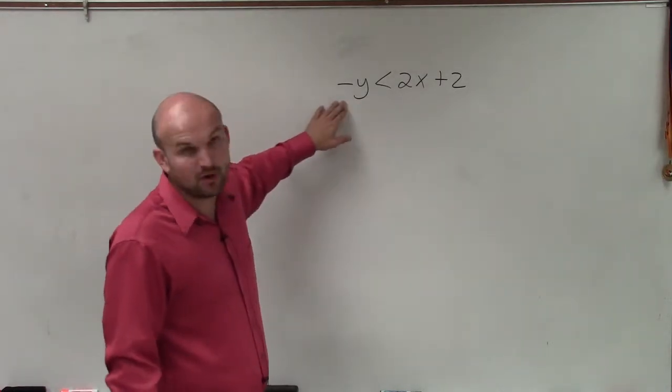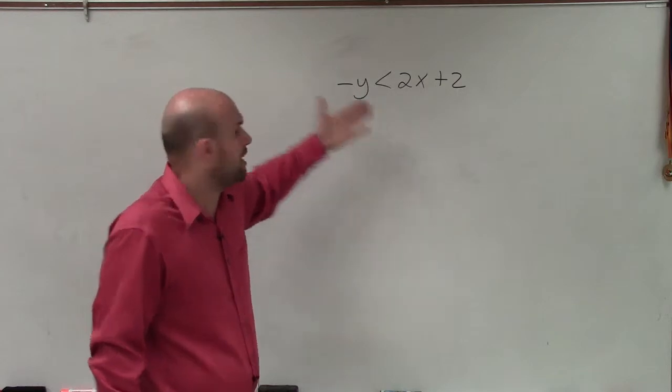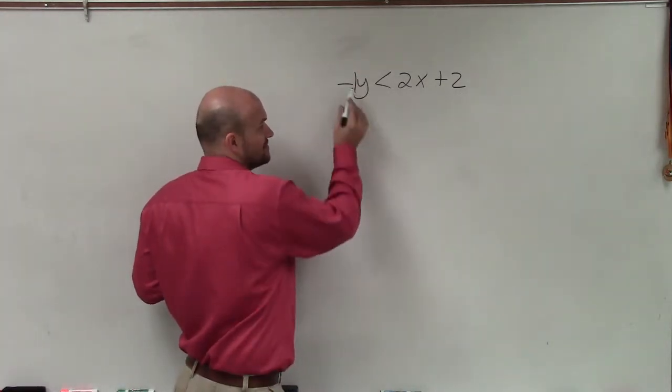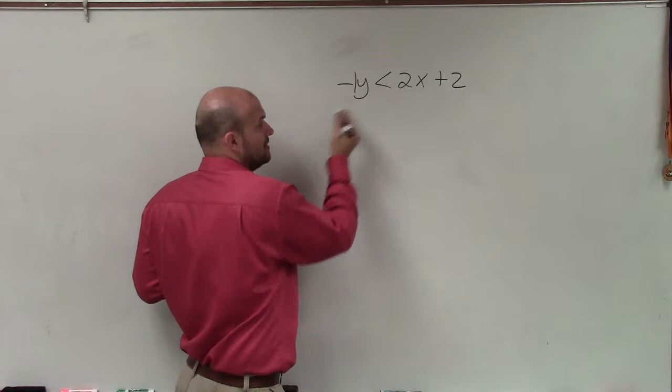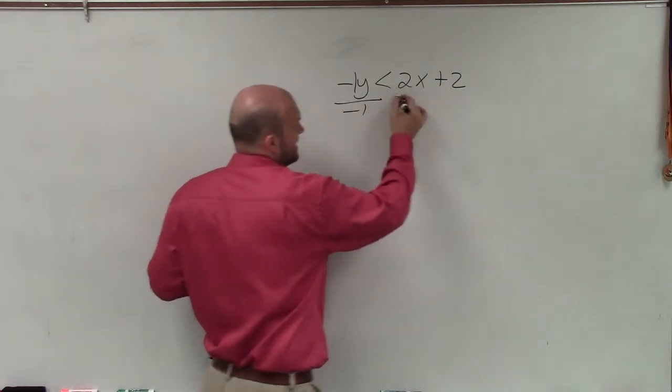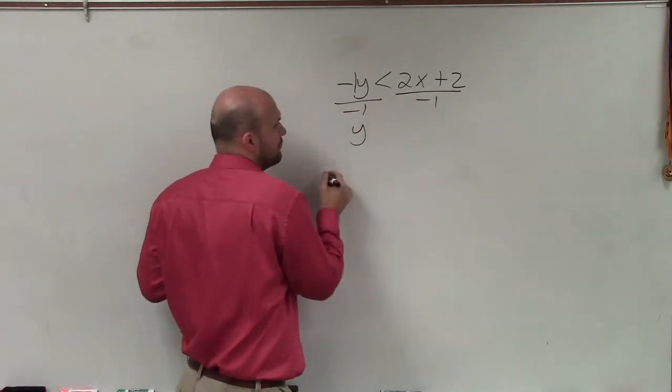Right now, we have y multiplied by negative 1, or you could say it's a negative y, but remember there's this little 1 that we can represent. So really, it would be multiplied by negative 1. Therefore, to undo this, I need to divide by negative 1 on both sides. So therefore, I have y.